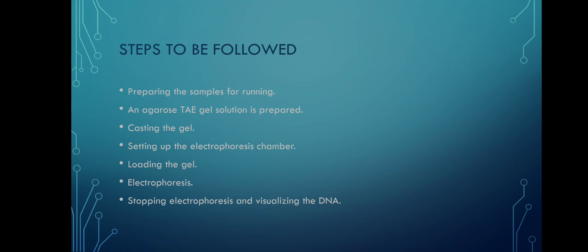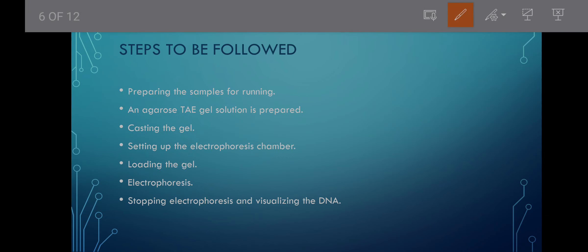The steps to follow are: first, prepare the sample for running; then prepare the agarose gel TAE solution; cast the gel; set up the electrophoresis chamber; load the gel; run the electrophoresis process; stop it once complete; and finally visualize the DNA, RNA, or whatever sample you have taken.